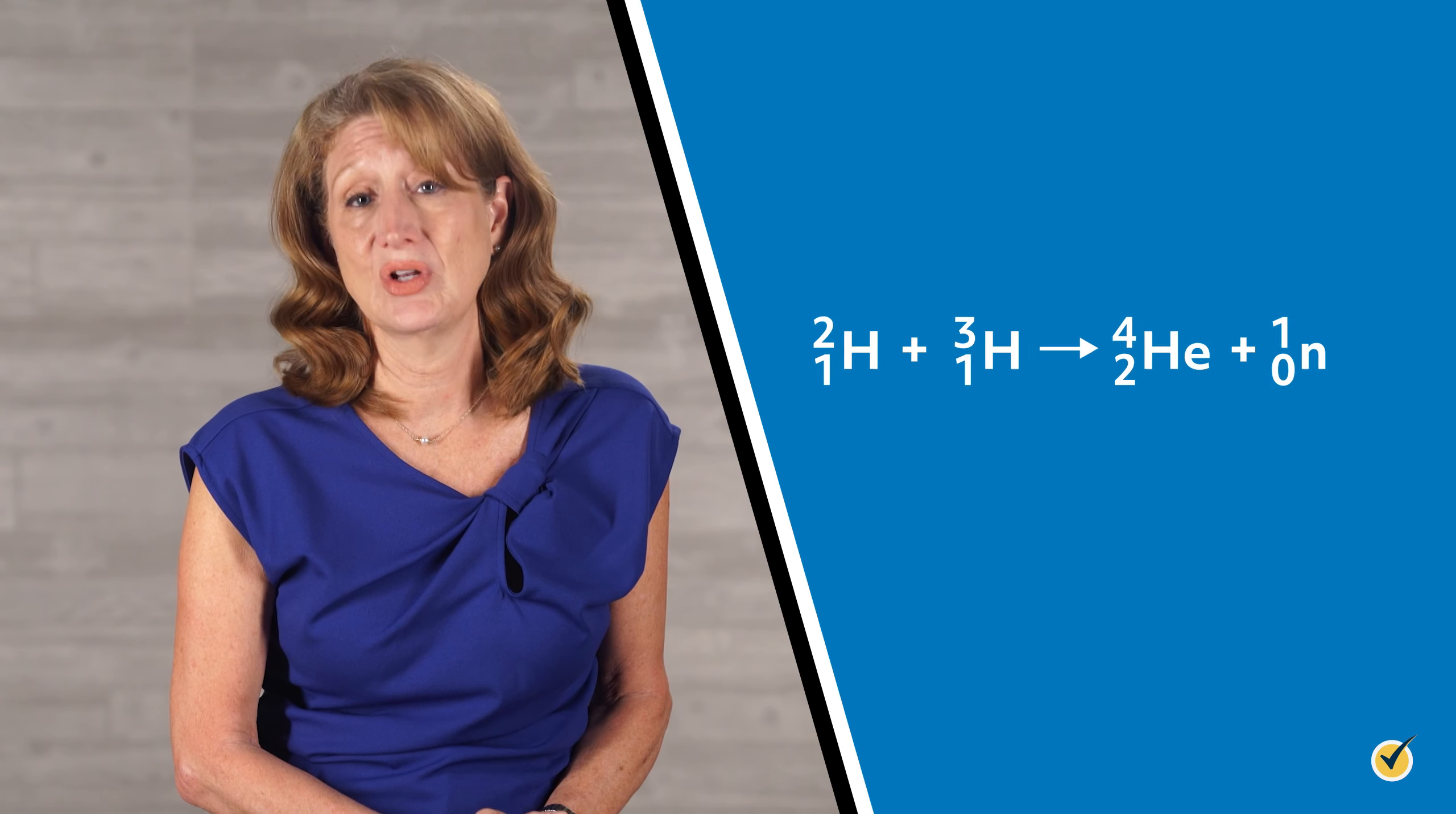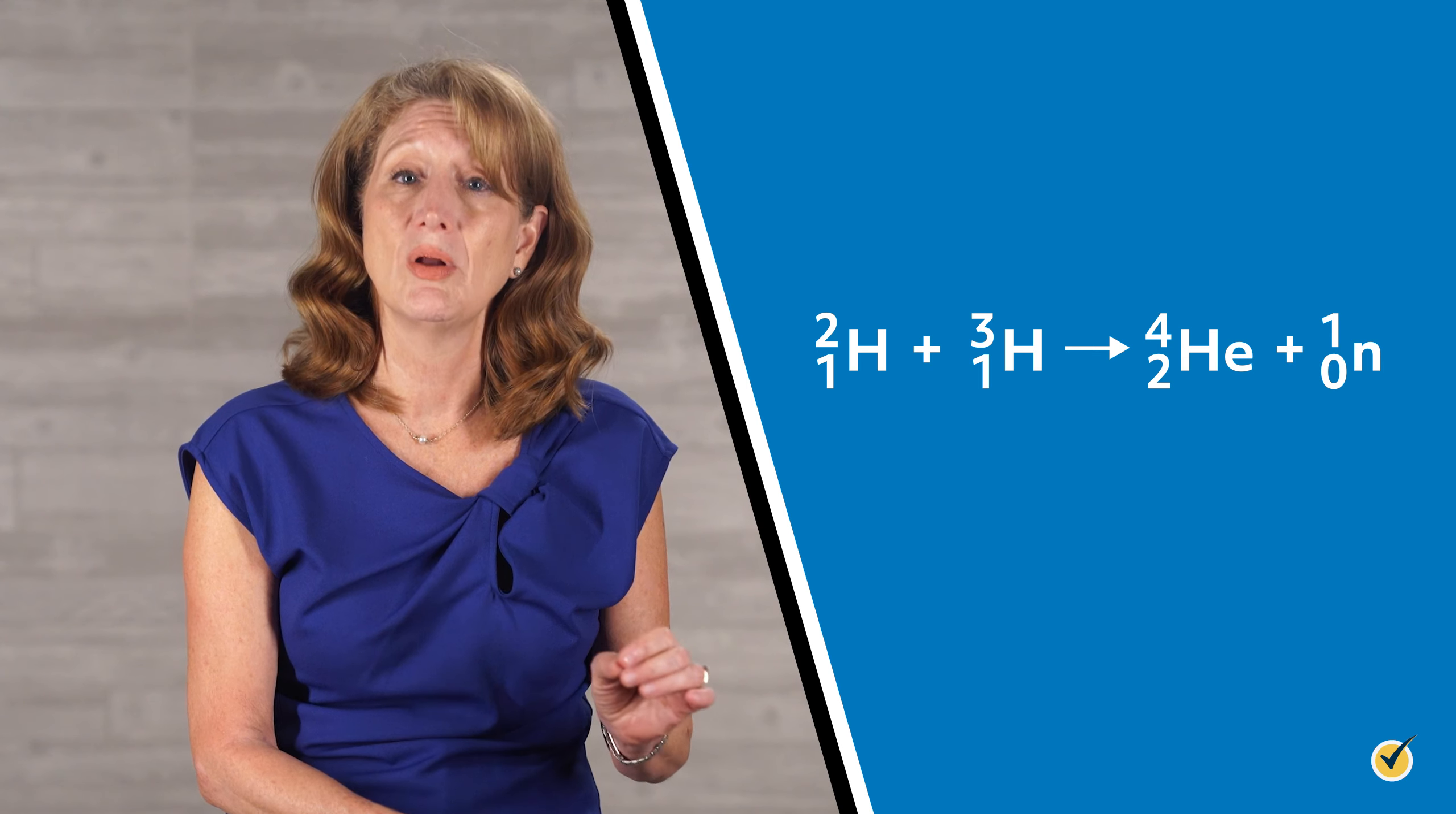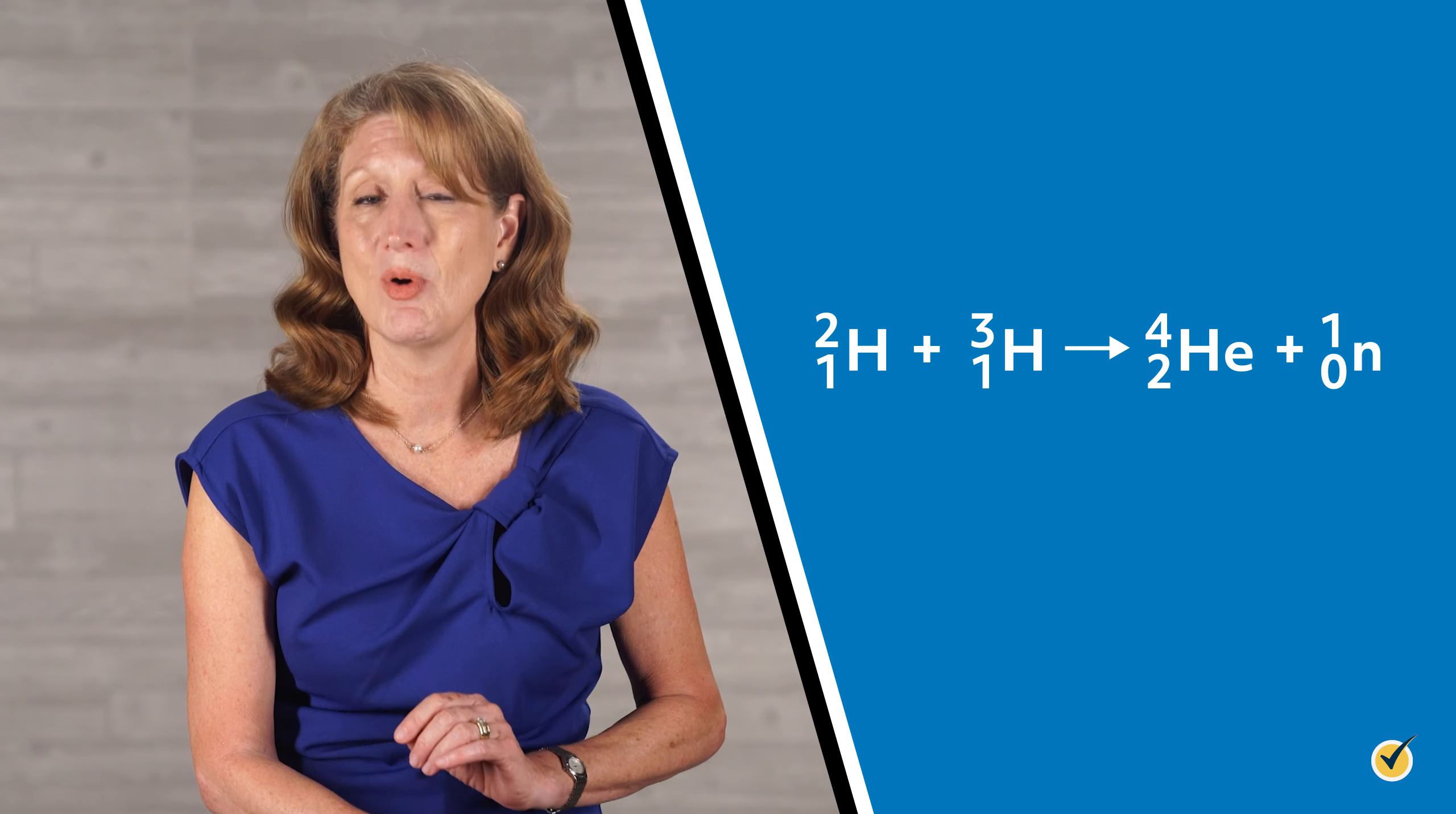Let's consider our initial example. Are the nucleons balanced? By adding the atomic numbers on the reactant side, we get 1 plus 1 equals 2 protons. And on the product side, we get 2 plus 0 equals 2. So we started with 2 protons and ended with 2 protons, which is what we want.